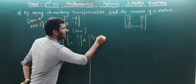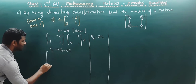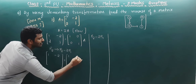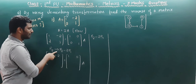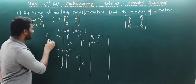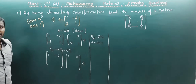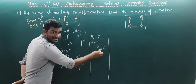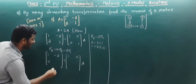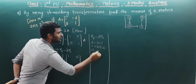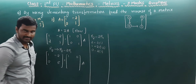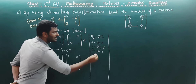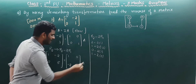Applying R2 → R2 - 2R1: R1 stays as [1, -2] with identity row [1, 0]. For R2: 2 minus 2×1 = 0. Then 1 minus 2×(-2) = 1 + 4 = 5. On the identity side, R2 is [0, 1]: 0 minus 2×0 = 0, and 1 minus 2×0 = 1. So the result is [1, -2; 0, 5] with identity becoming [1, 0; 0, 1].